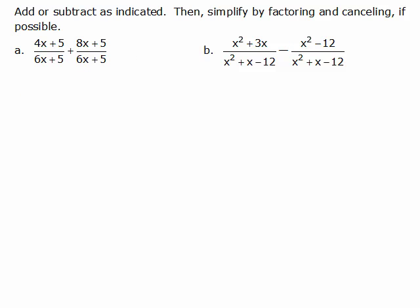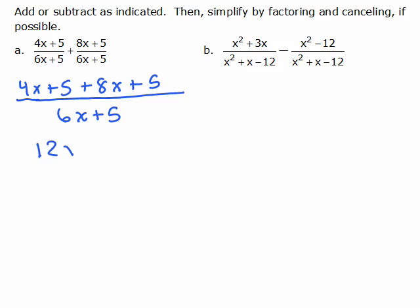We're adding now, we can only add if we have a common denominator and luckily in a and b we've got common denominators. So we can just add the numerators. So we have 4x plus 5 added to 8x plus 5. And the denominator just stays the same. You do not add the denominators.